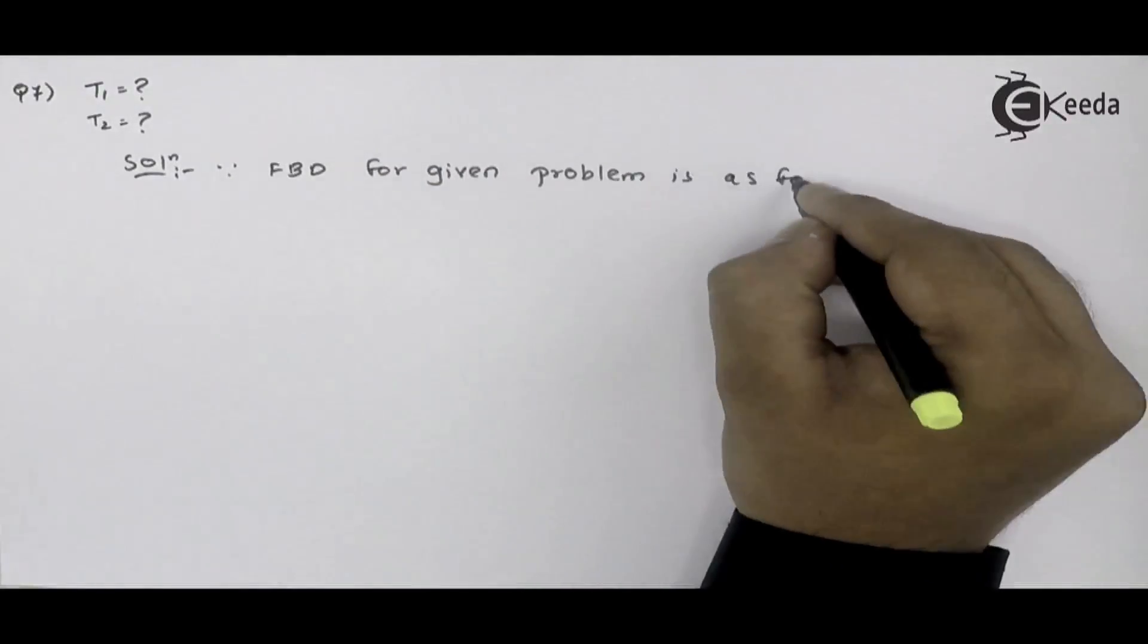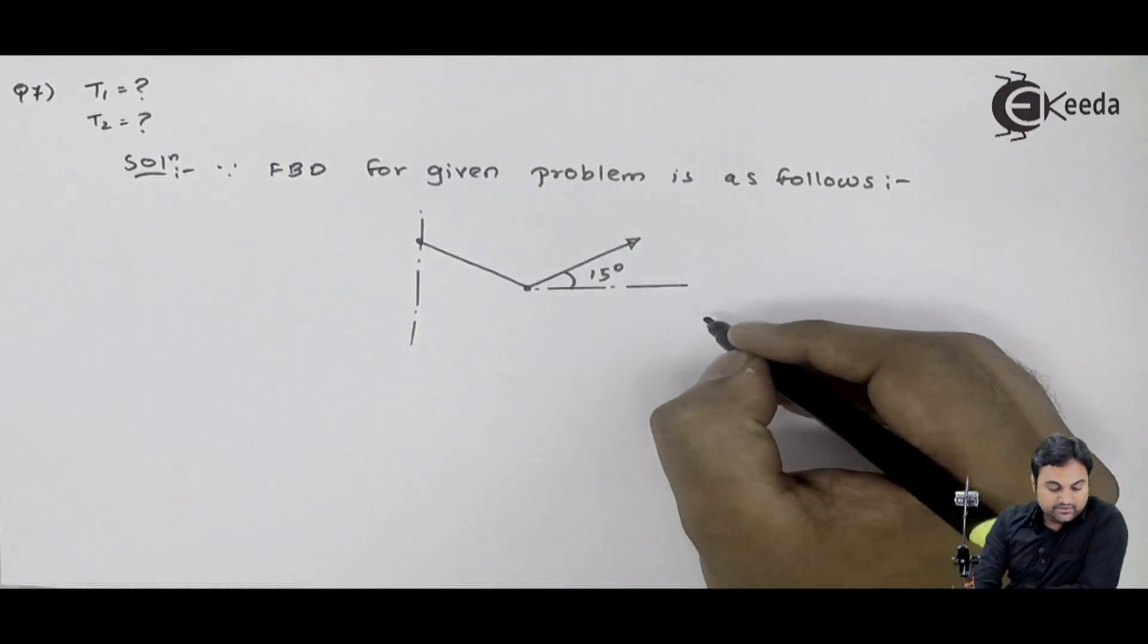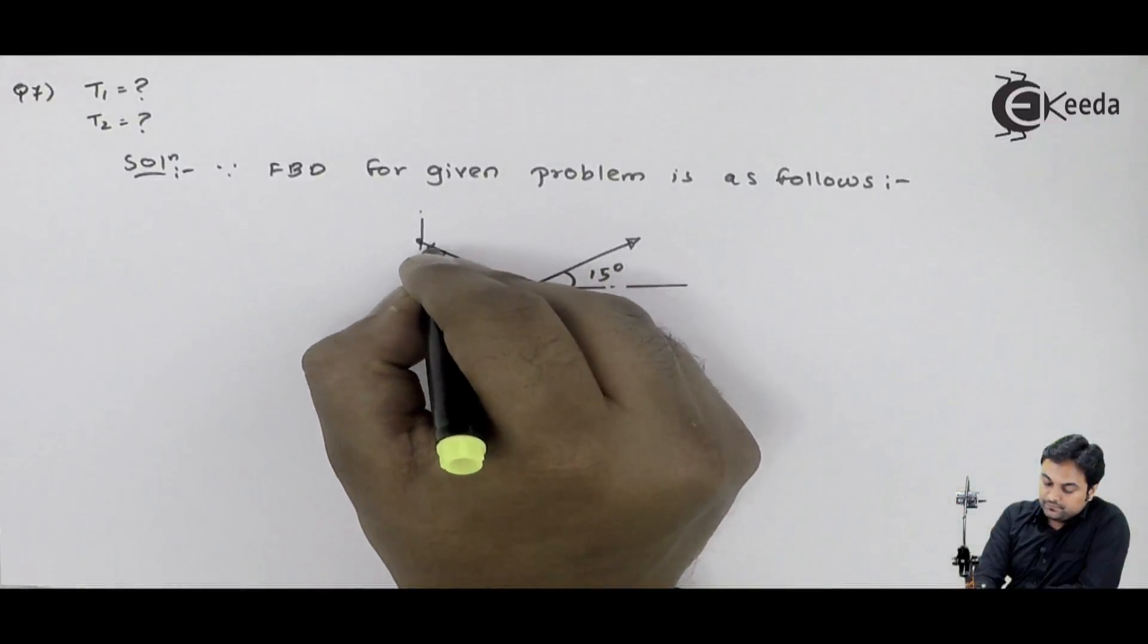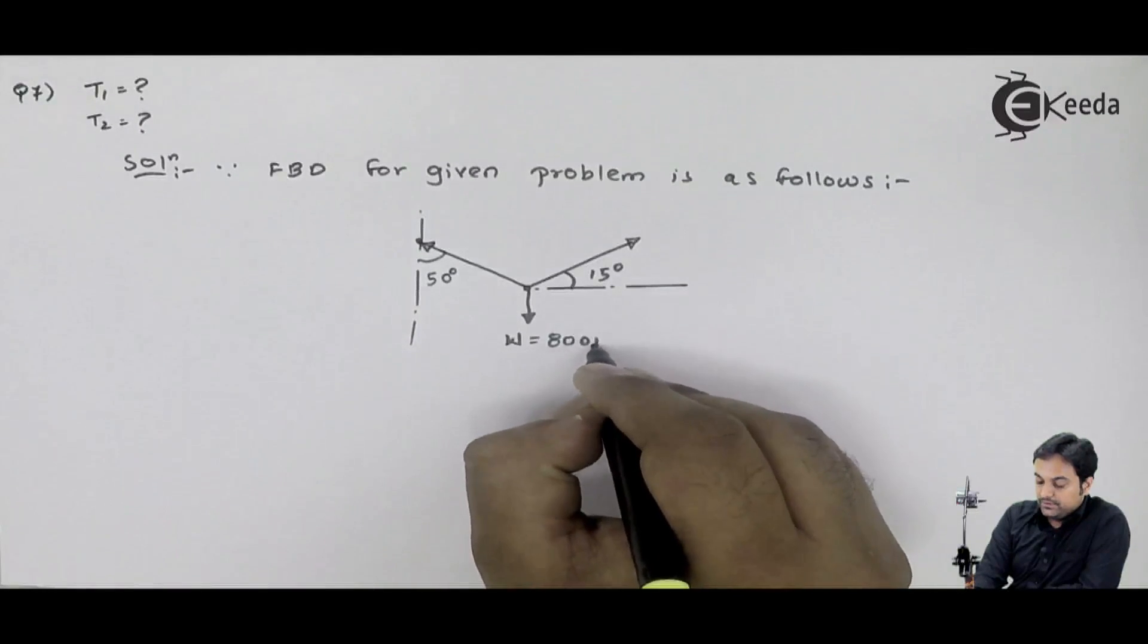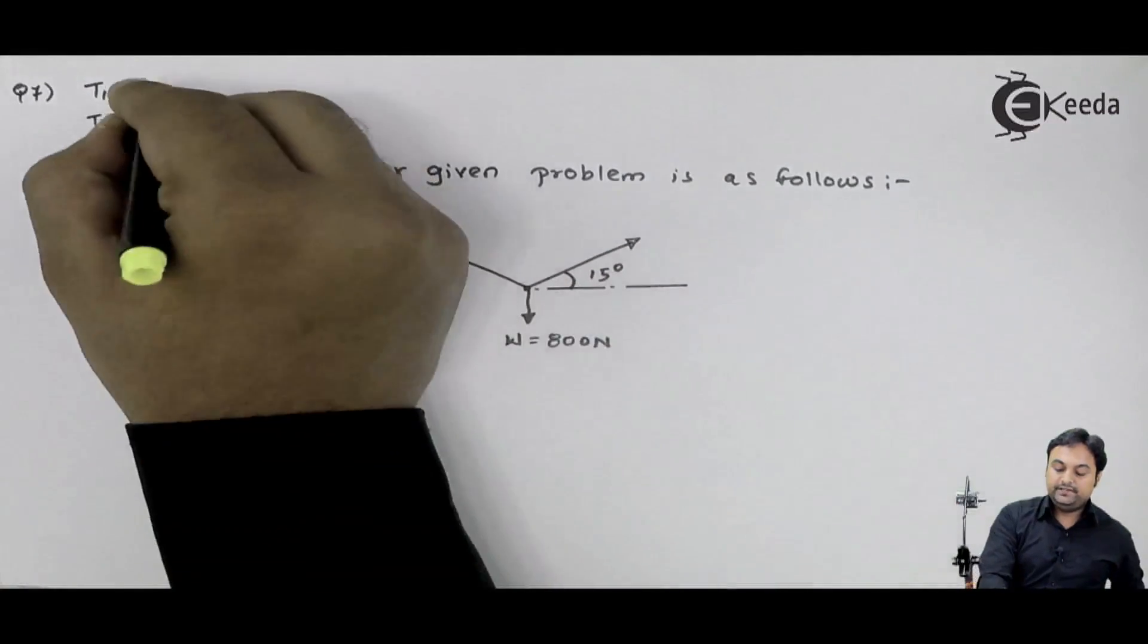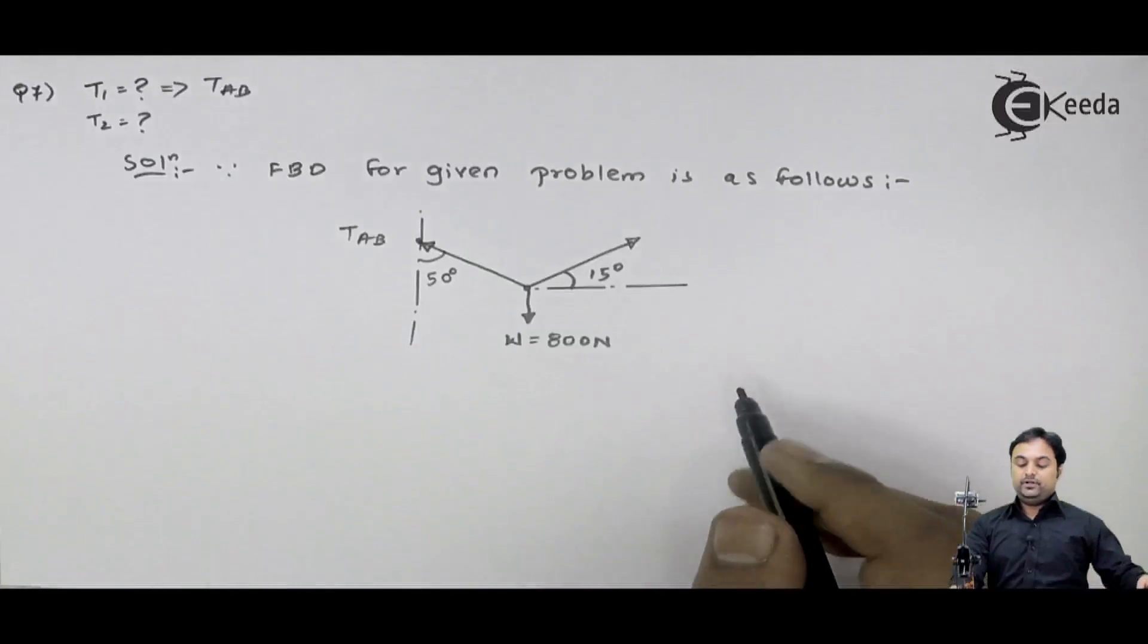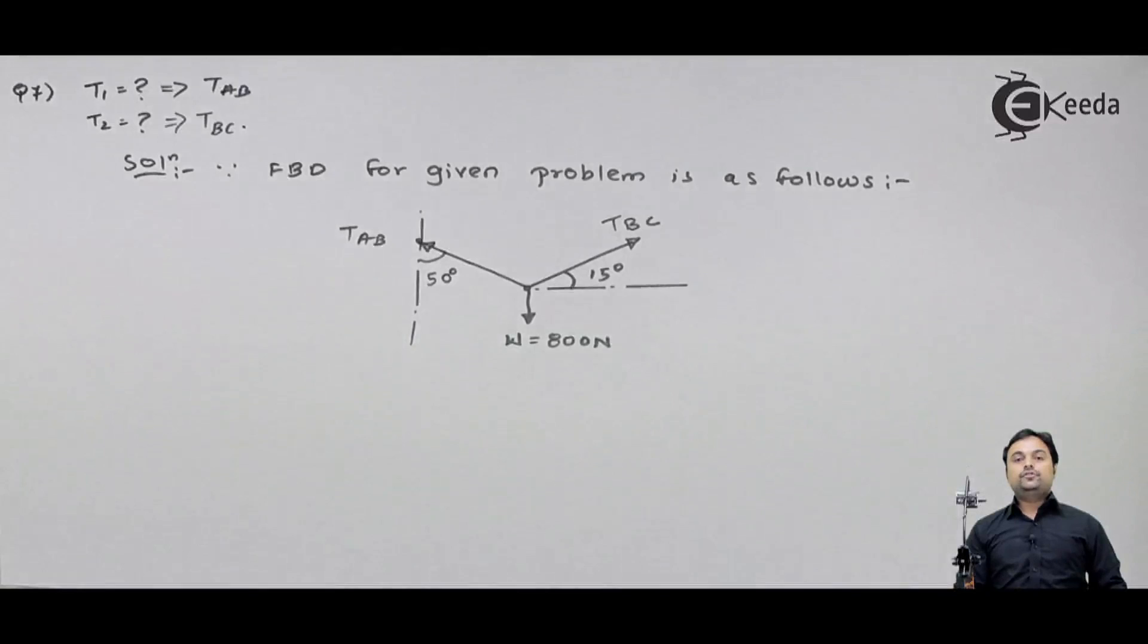At 15 degree inclination, we have one force. At 50 degree with vertical level, you have another force. Then we have even load acting whose value is 800 Newton. Now if we look at this question, here I have AB and BC, so the tension in AB I will call it as TAB or for me this will be T1. T1 is nothing but TAB. Then tension in string BC would be called as TBC, tension in string BC and that is nothing but T2 for me. So if I calculate T1 and T2, it means I have calculated TAB and TBC.